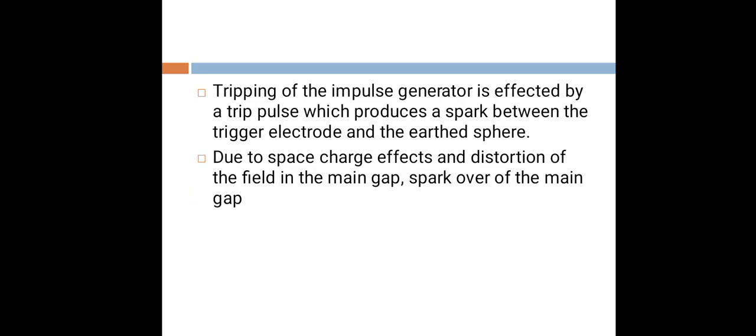Tripping of the impulse generator is effected by a trip pulse which produces a spark between the trigger electrode and the earthed sphere. Due to space charge effects and distortion of the field in the main gap, sparkover of the main gap occurs. Thank you.